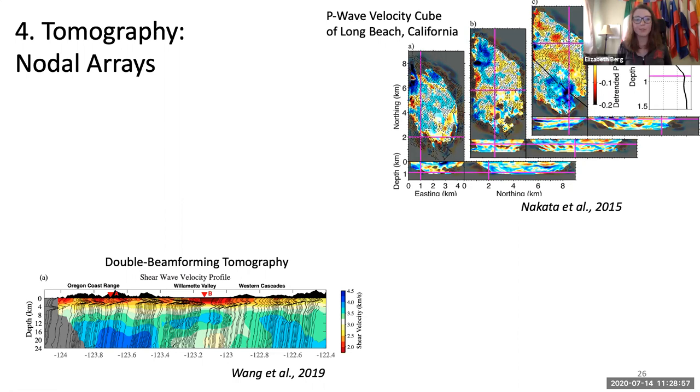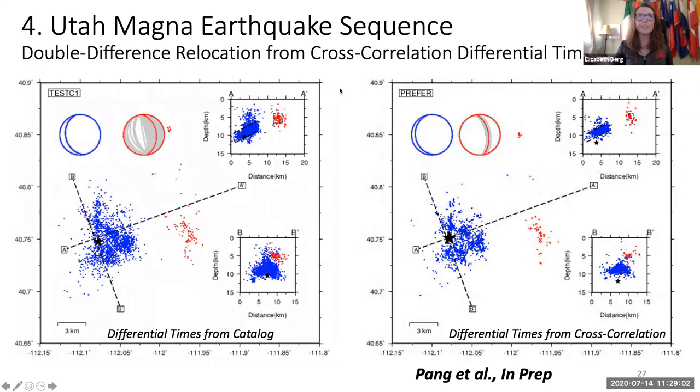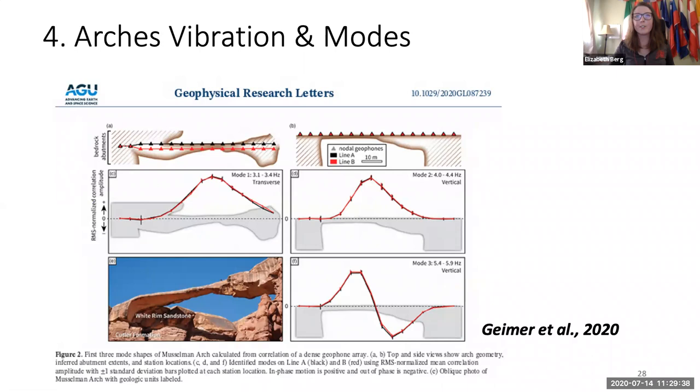A quick shout out that the recent Utah Magna earthquake sequence - there's a PhD candidate about to graduate, Uyen Tom, who did double difference relocation using cross correlation differential times. You can see that just using differential times from the catalog gives you kind of pretty uncertain results. And then using differential times from cross correlation really tightens up results, which is really important for us to be able to characterize the Magna earthquake sequence for Salt Lake City, Utah, and determine hazard analysis, risk analysis, imaging fault structure, et cetera.